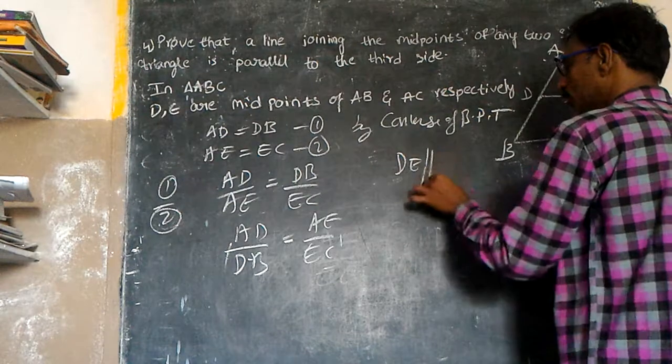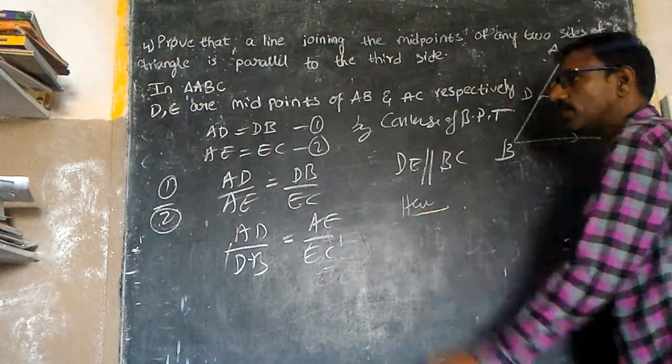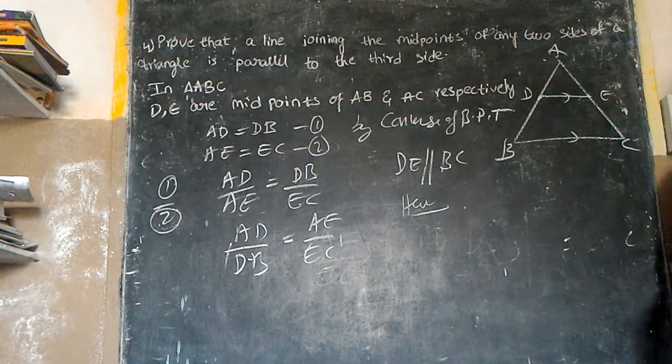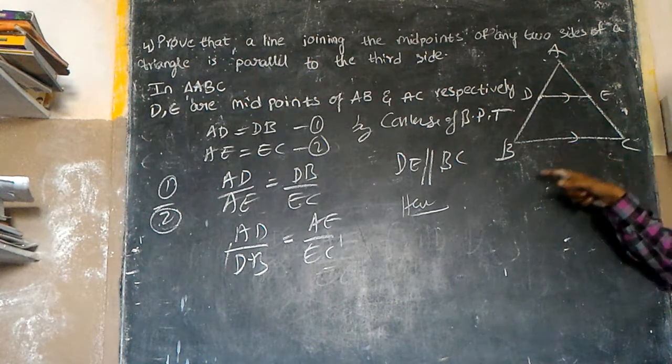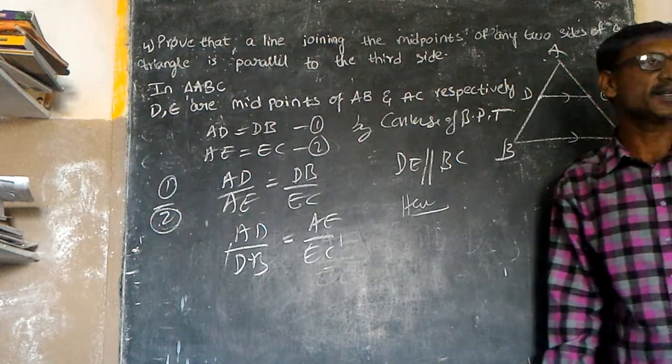DE is parallel to BC. Hence, we have proved that a line joining the midpoints of two sides of a triangle is parallel to the third side.